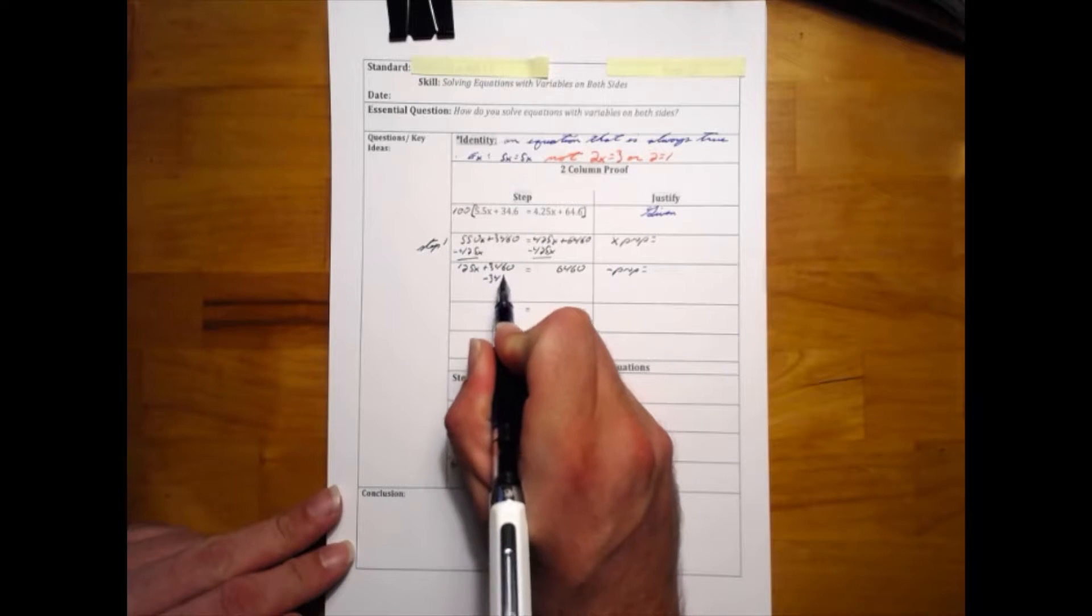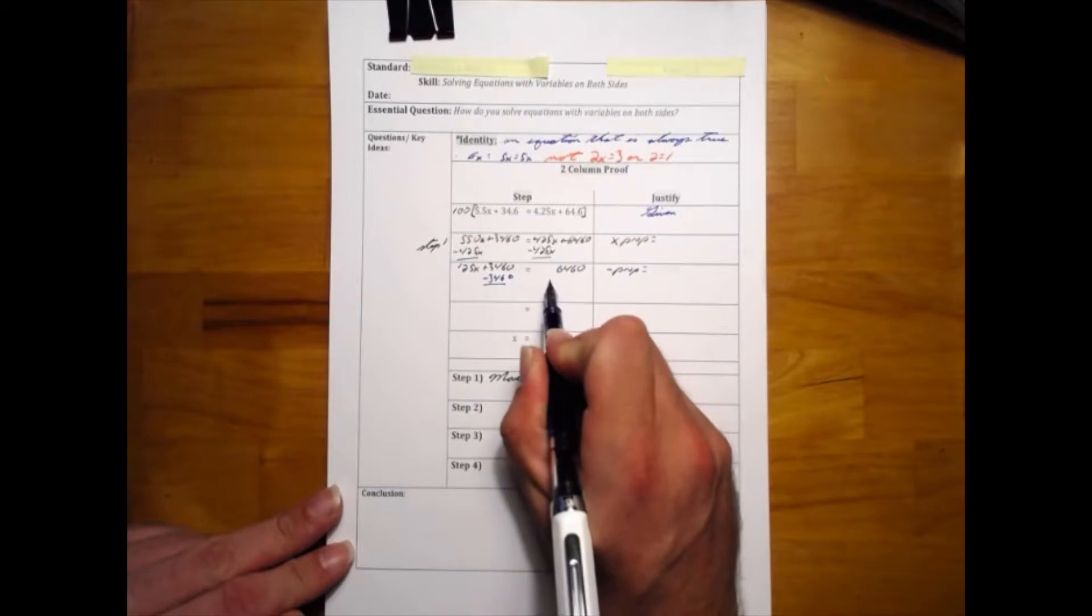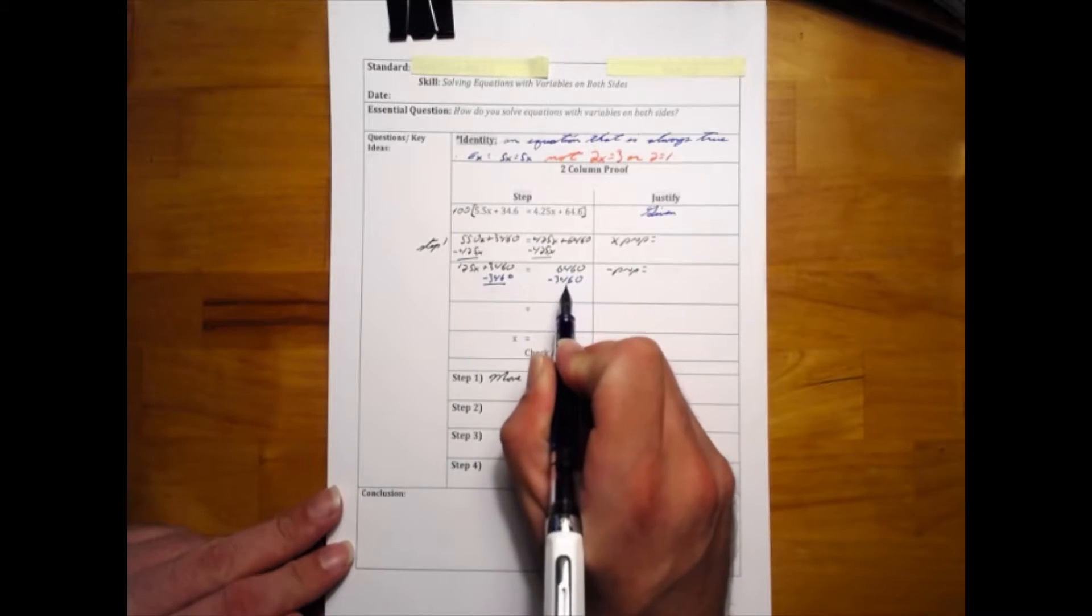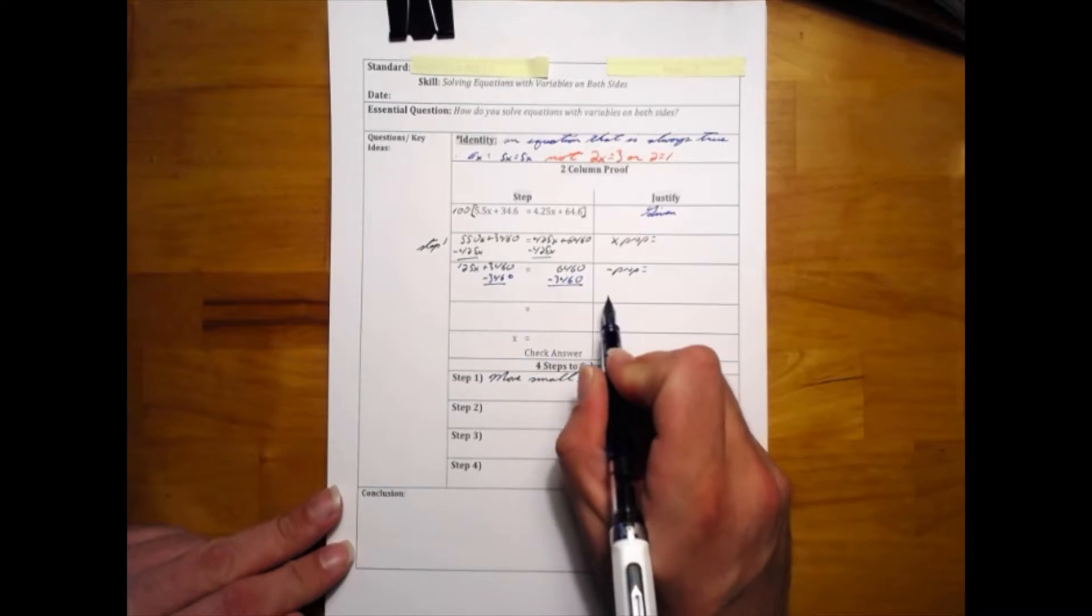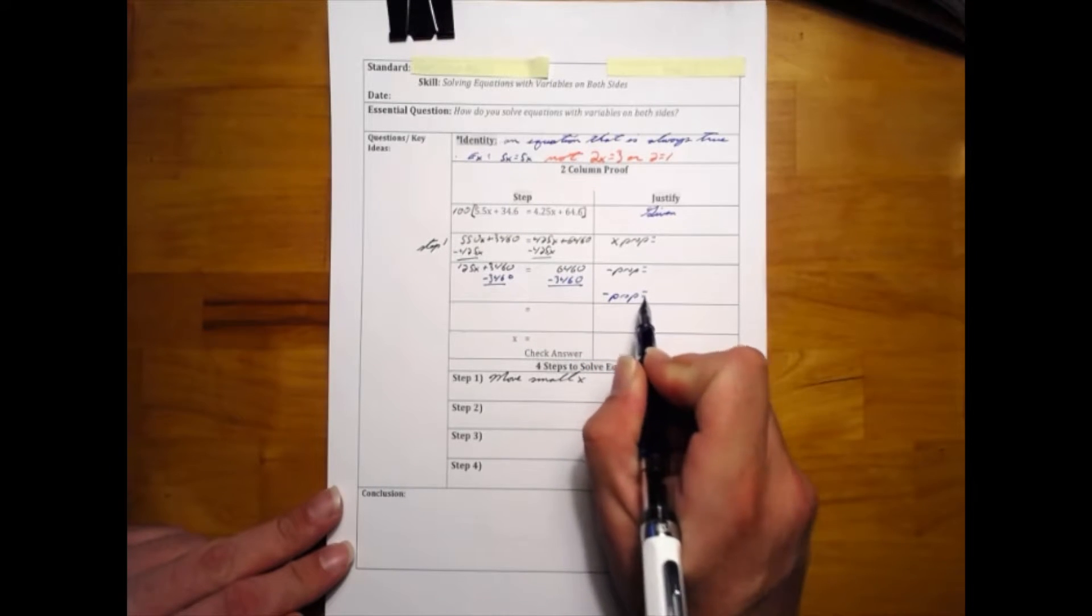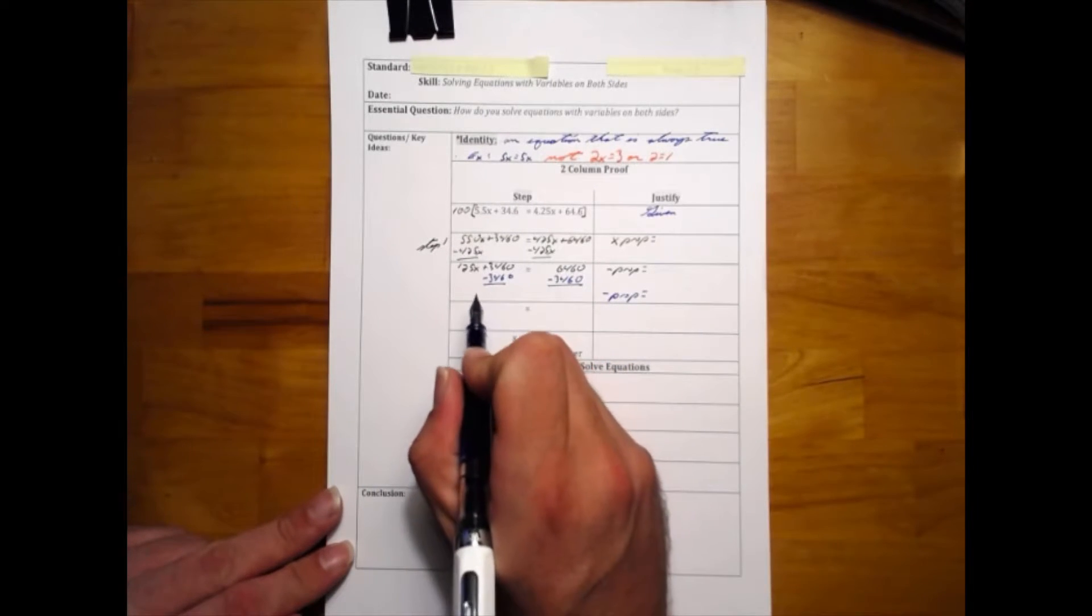move 3460 to the other side by subtracting it from both sides. We're using the subtraction property of equality, and our new equation is 125x equals 3000.